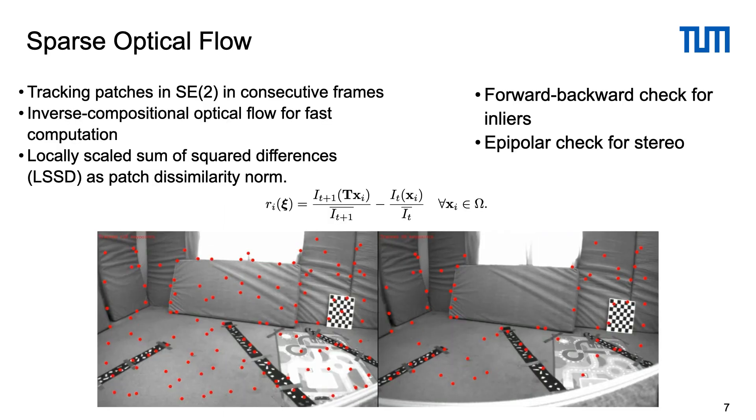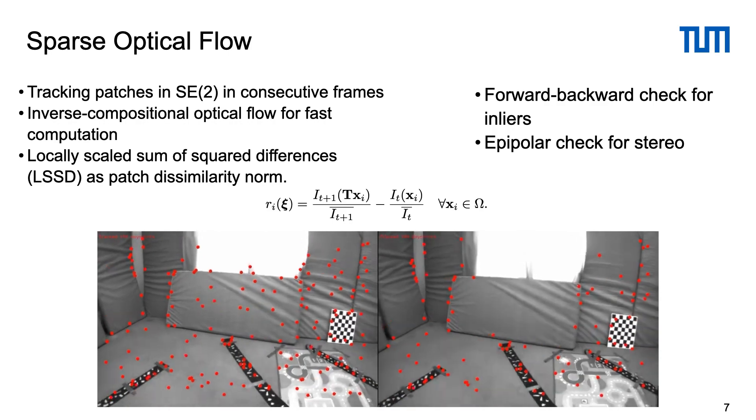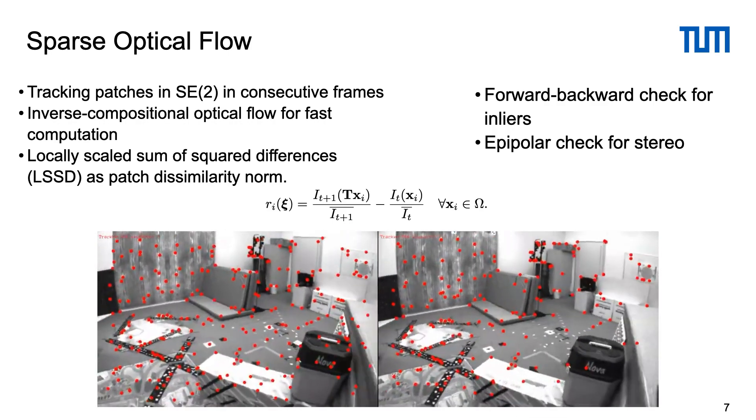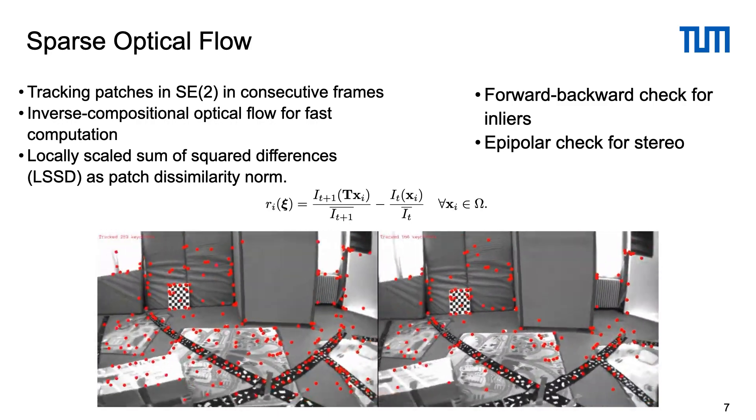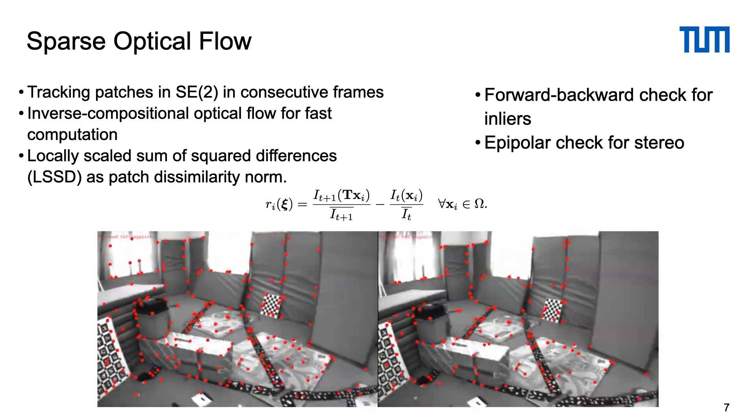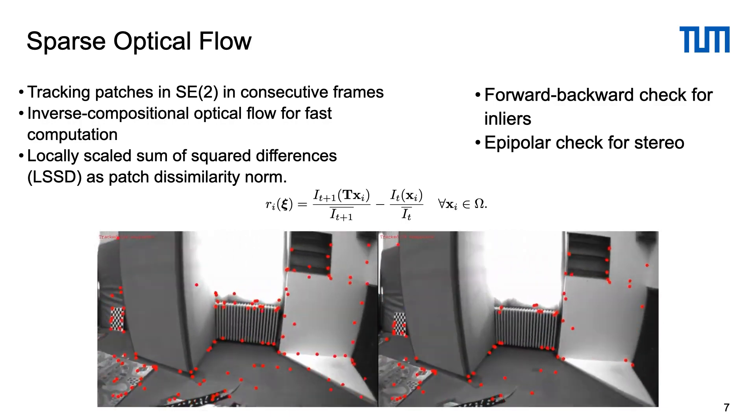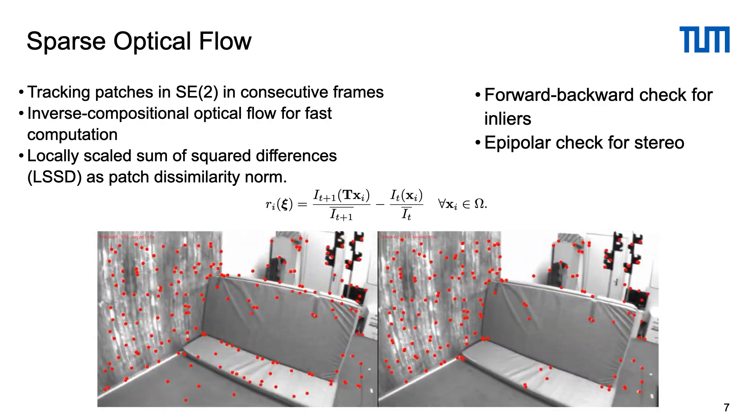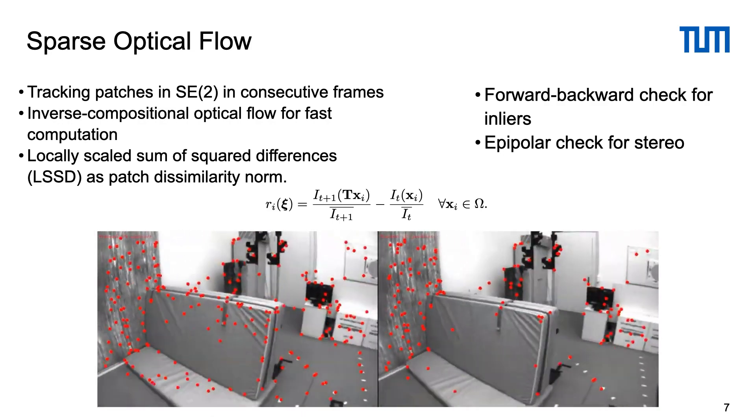Let's get started with the first layer, which is the visual inertial odometry. We first use a sparse optical flow to track short-term visual features. We track patches from frame to frame assuming SE2 transformation between them. We use an inverse compositional approach for warping patches and locally scaled sum of squared differences to make a fast feature tracker that is invariant to changes in the exposure time.